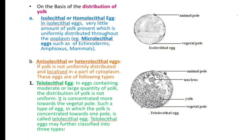Next, on the basis of distribution of yolk. First are the isolecithal or homolecithal eggs. In isolecithal eggs, a very little amount of yolk is present, which is uniformly distributed throughout the ooplasm. For example, microlecithal eggs such as those of echinoderms, amphioxus and mammals. This diagram shows the isolecithal egg.